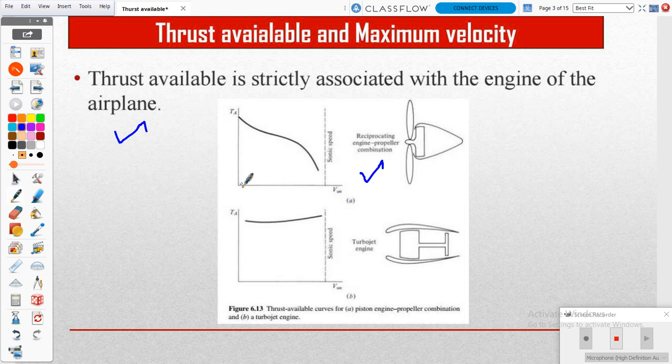When we start our vehicle at zero velocity, the thrust available will be needed in high amount. After increasing the speed of our vehicle, thrust available will drop. This is the curve for a reciprocating engine.